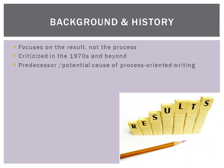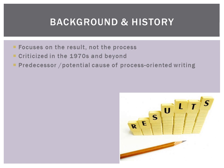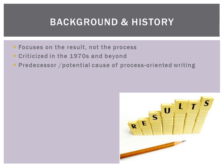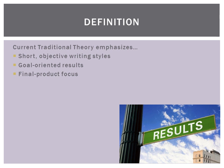Current traditional theory really looks at that end result, which is why it's criticized. The definition of current traditional theory is a short, objective writing style. It's goal-oriented, meaning there's a final product focus. A short paper takes some form — like a five paragraph essay — where the student has a topic and completes it.